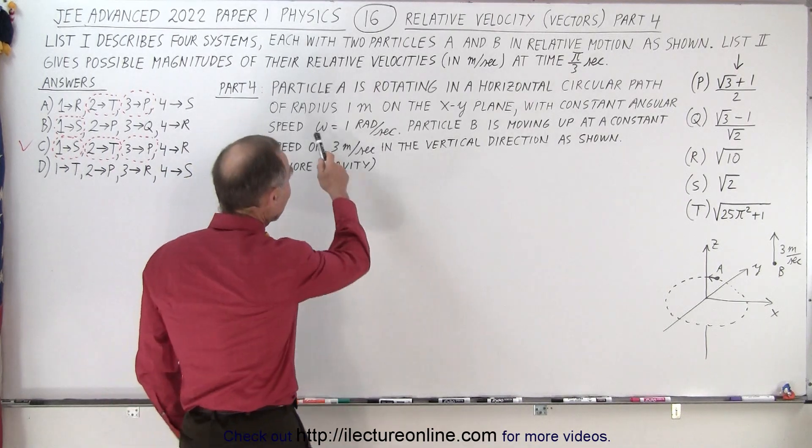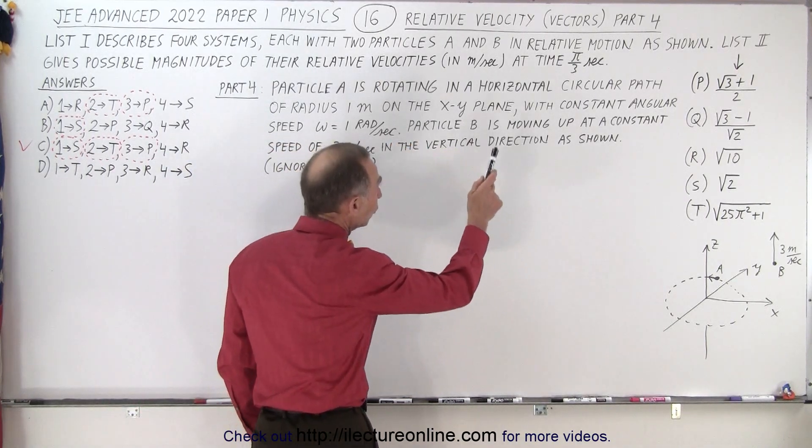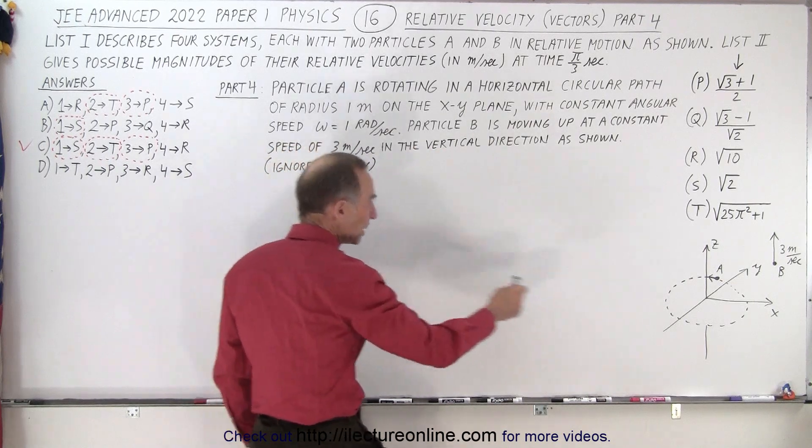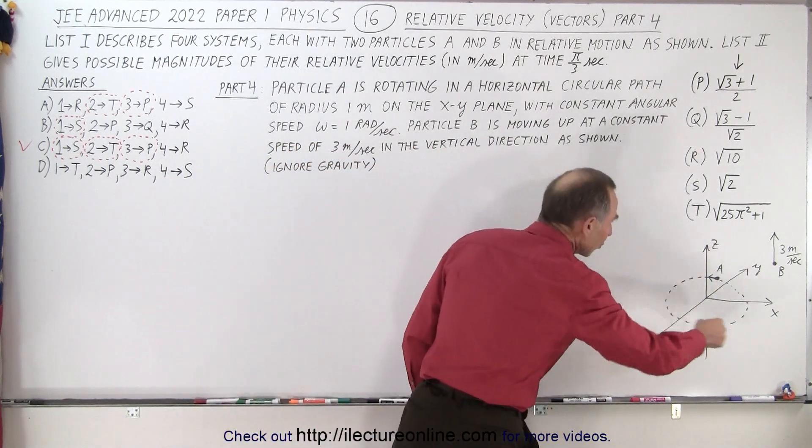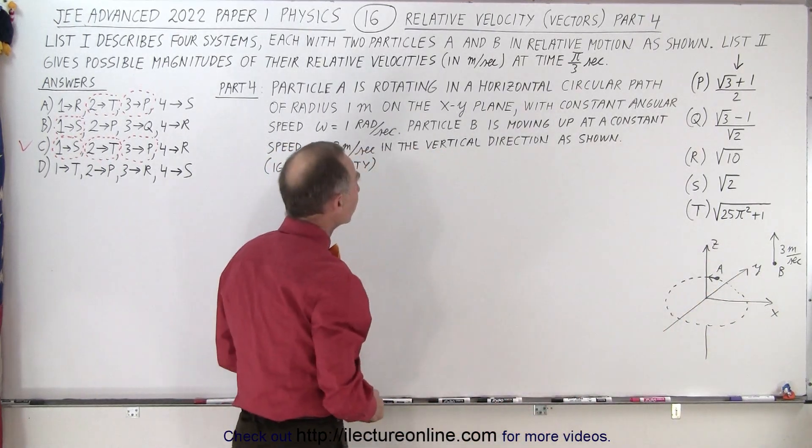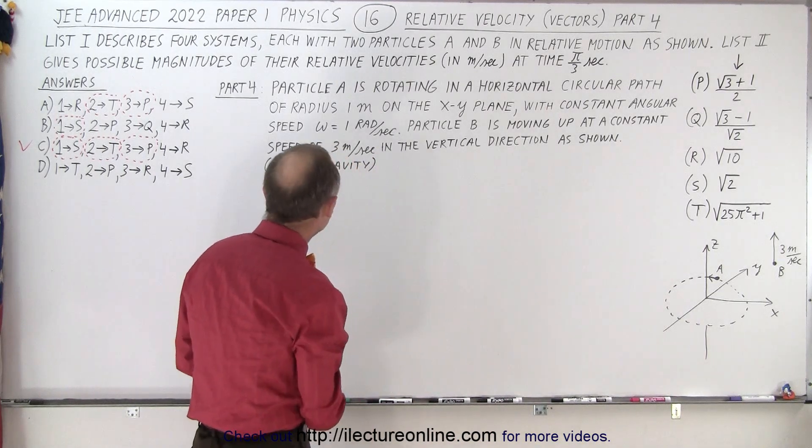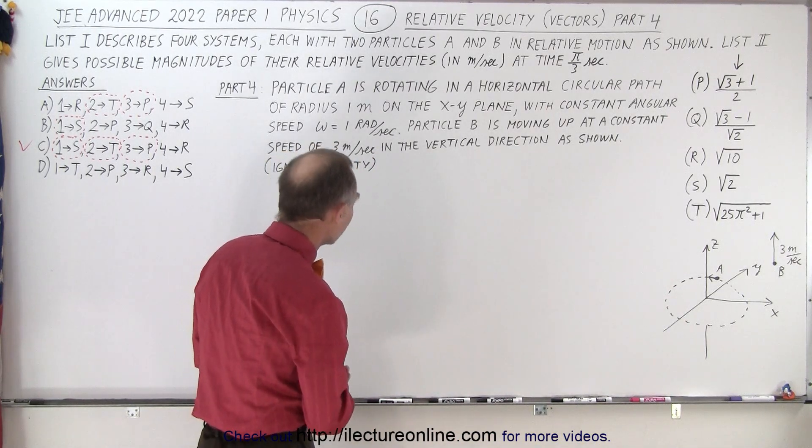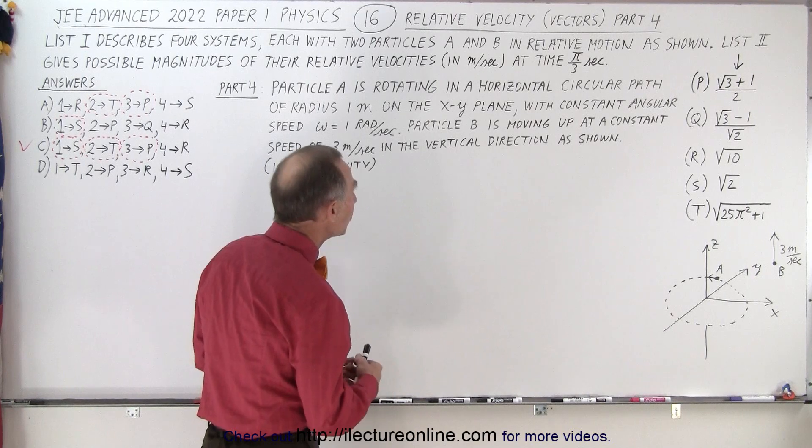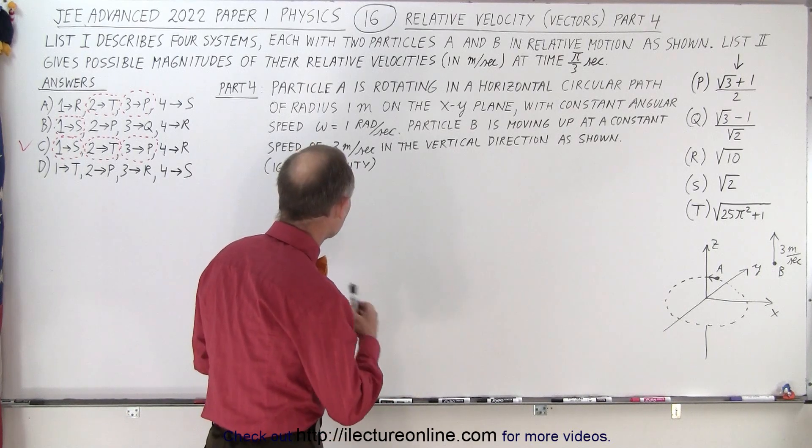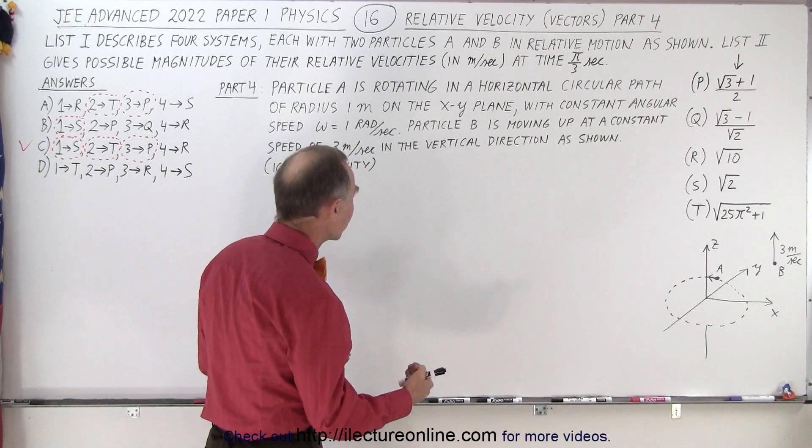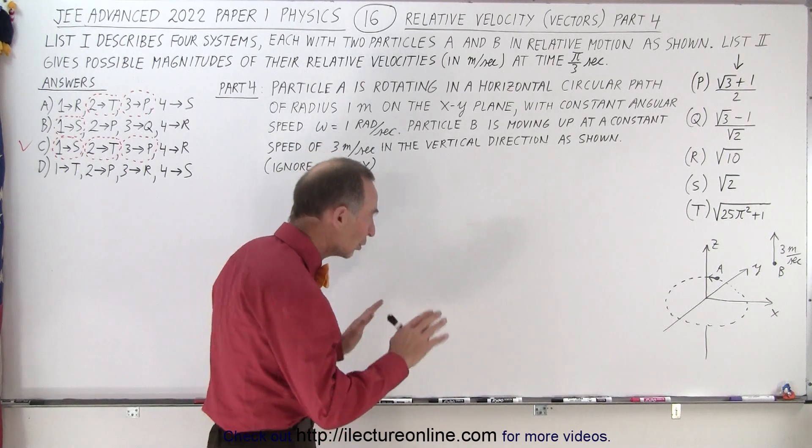So here it says that particle A is rotating on a horizontal circular path of radius one meter in the XY plane with constant angular speed omega equals one radian per second. Particle B is moving up at a constant speed of three meters per second in the vertical direction as shown, ignore gravity.